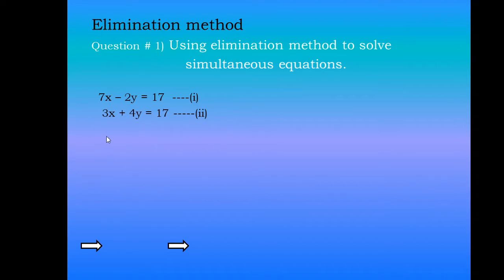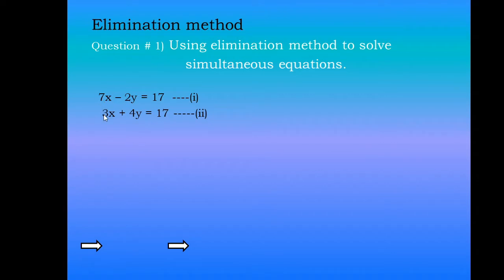Elimination method means either we'll eliminate the x variable first or the variable y. In this way we'll get the values of x and y step by step. So if we want to eliminate the variable x first, then we'll multiply to make the coefficients of x the same. We'll multiply equation 1 with 3 to make it 21, and equation 2 with 7 to make it 21.